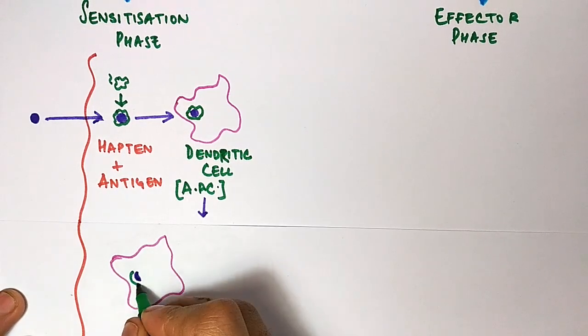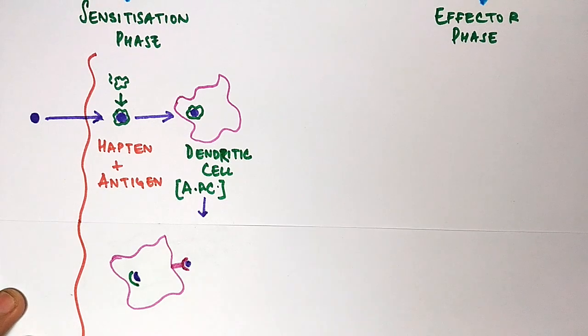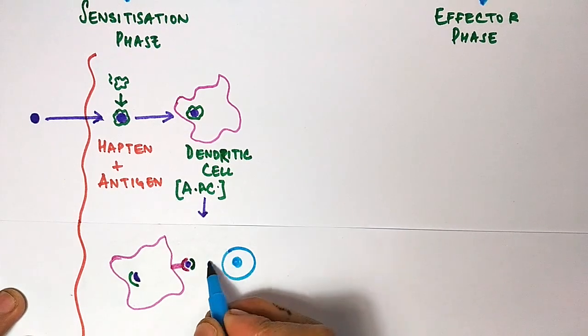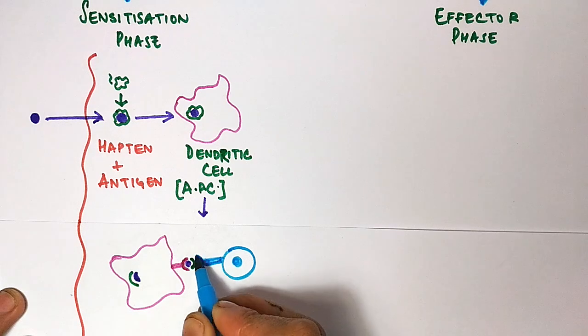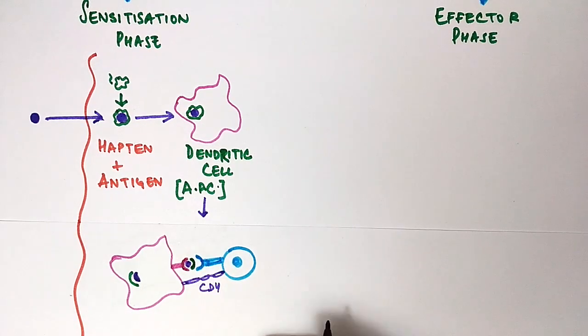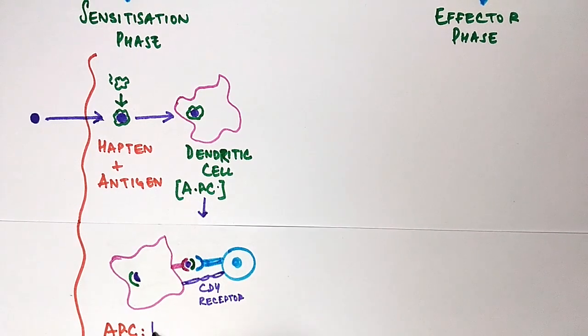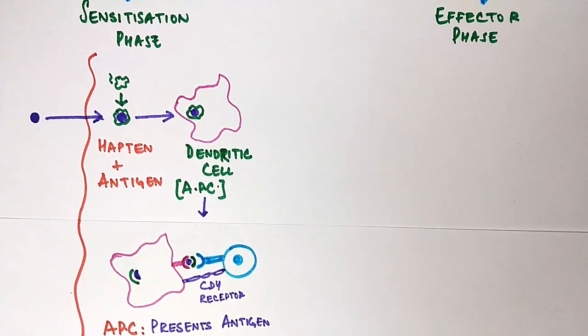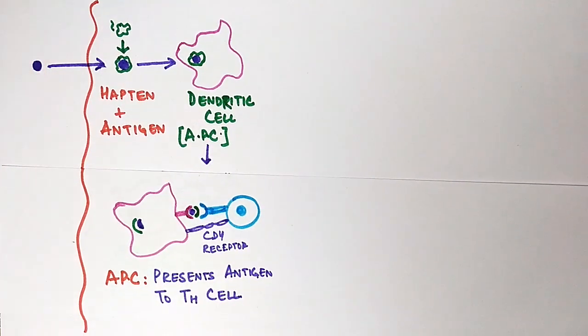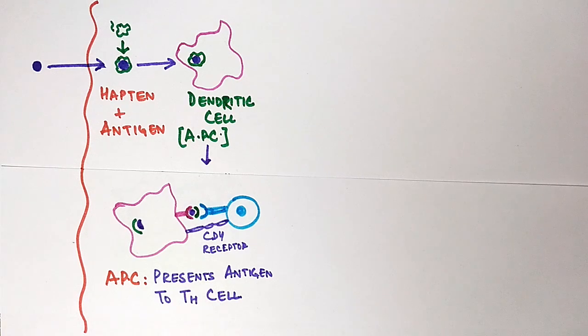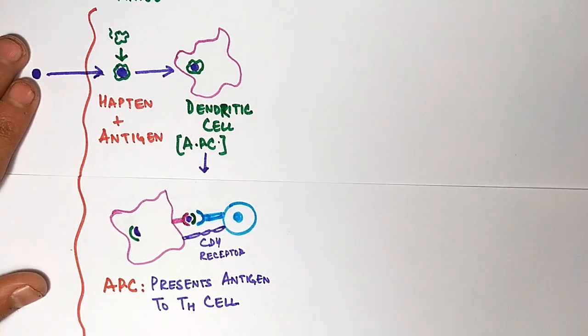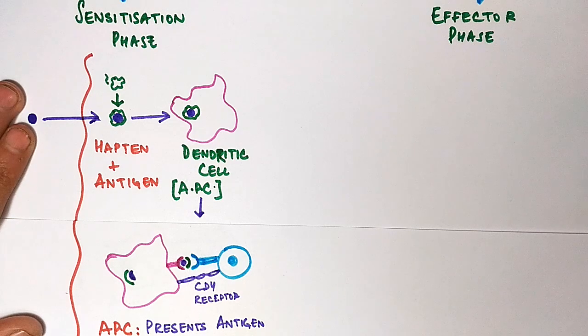It creates a response and from the other hand we have the helper T cells that come into play here. These helper T cells have CD4 receptors on them. They bind to the dendritic cells and cause a response here. So here only the sensitization takes place. This helper T cell sensitizes itself towards the respective antigen. So this CD4 receptor recognizes what kind of antigen it is, what kind of protein it is, marks this protein, and sensitizes itself to this protein.